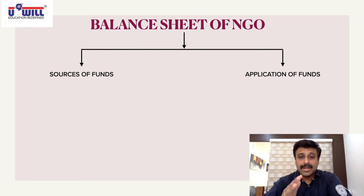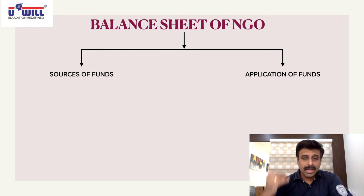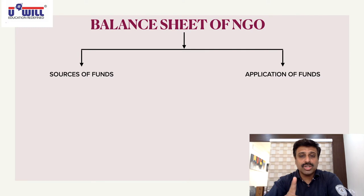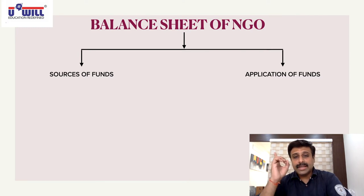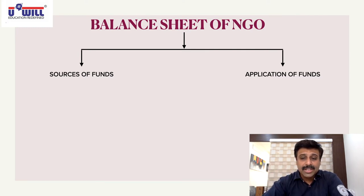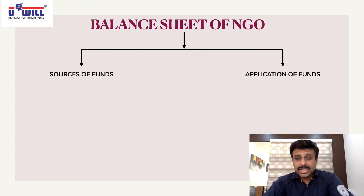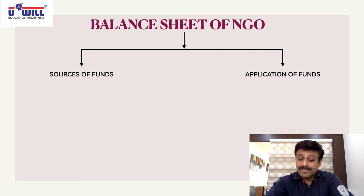Instead of liabilities, what we call it in the balance sheet is 'Sources of Funds.' Instead of assets, we call it 'Application of Funds.' Write down this diagram in your notebook. The balance sheet includes two things: Sources of Funds and Application of Funds.